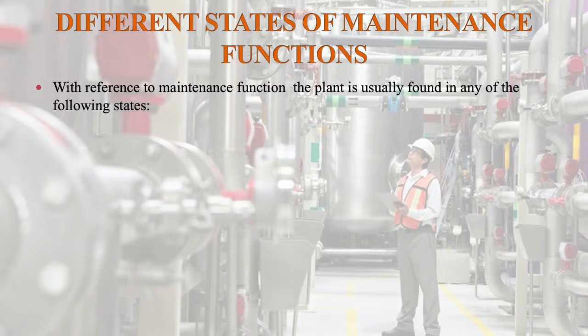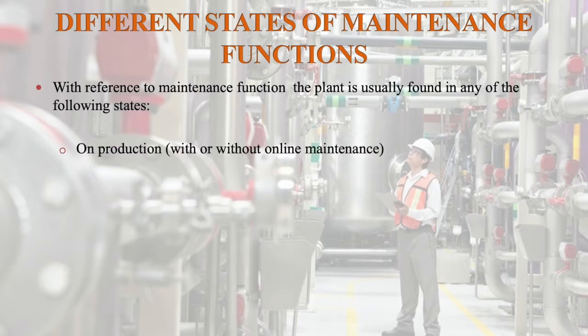Different states of maintenance functions. With reference to maintenance function, the plant is usually found in any of the following states. Machines and equipment in production departments can be found in various states. One is on production — with or without online maintenance. Here the machine is producing, but with or without online maintenance. Sometimes maintenance people will do maintenance online, or during a two to three minute break they will rectify problems or carry out simple minor repairs.